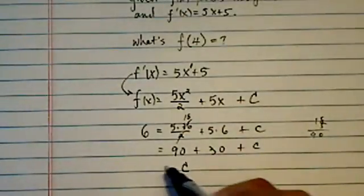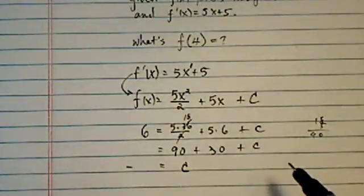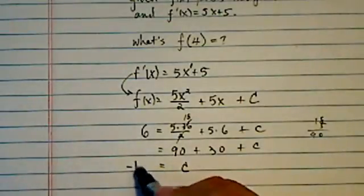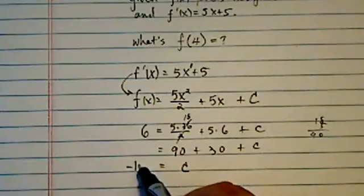So c is equal to minus 120 minus, let's say, 126, so 120, 114.